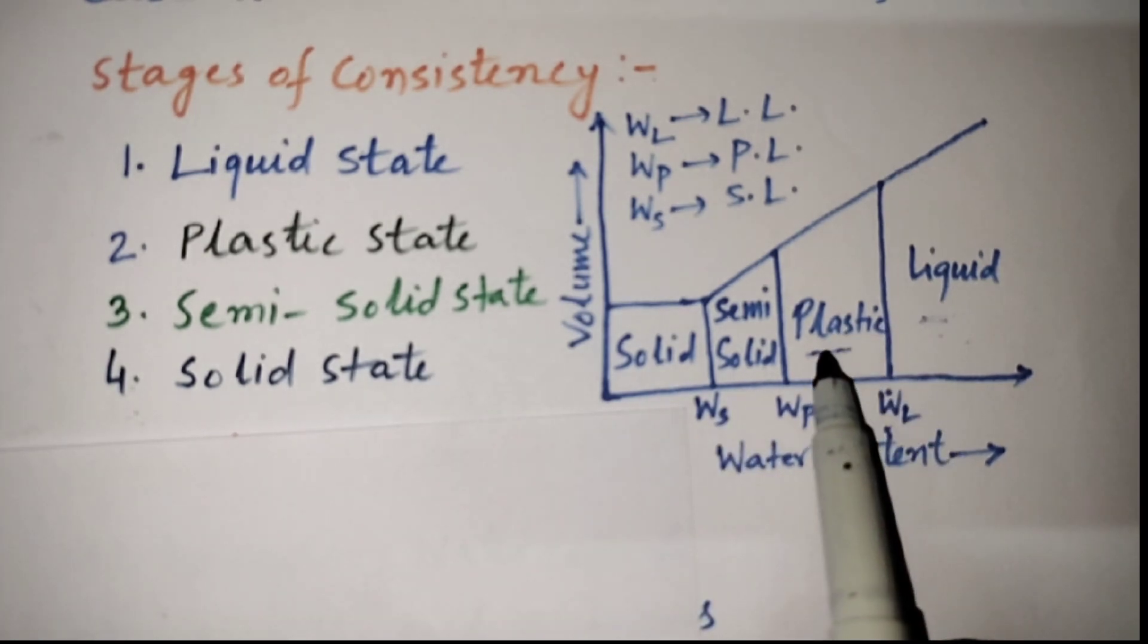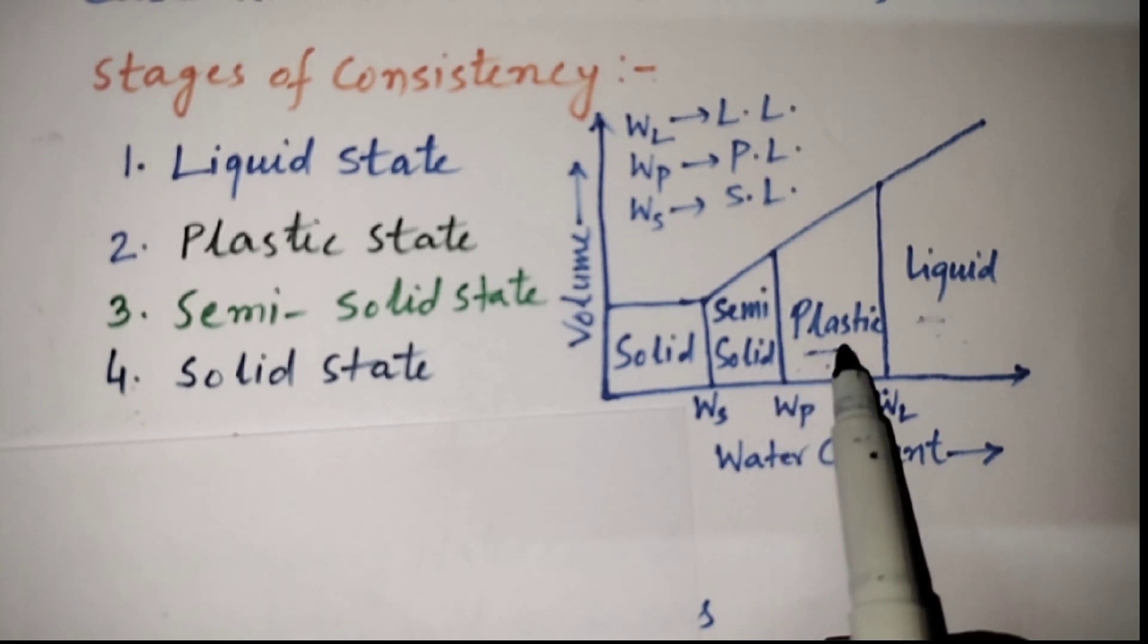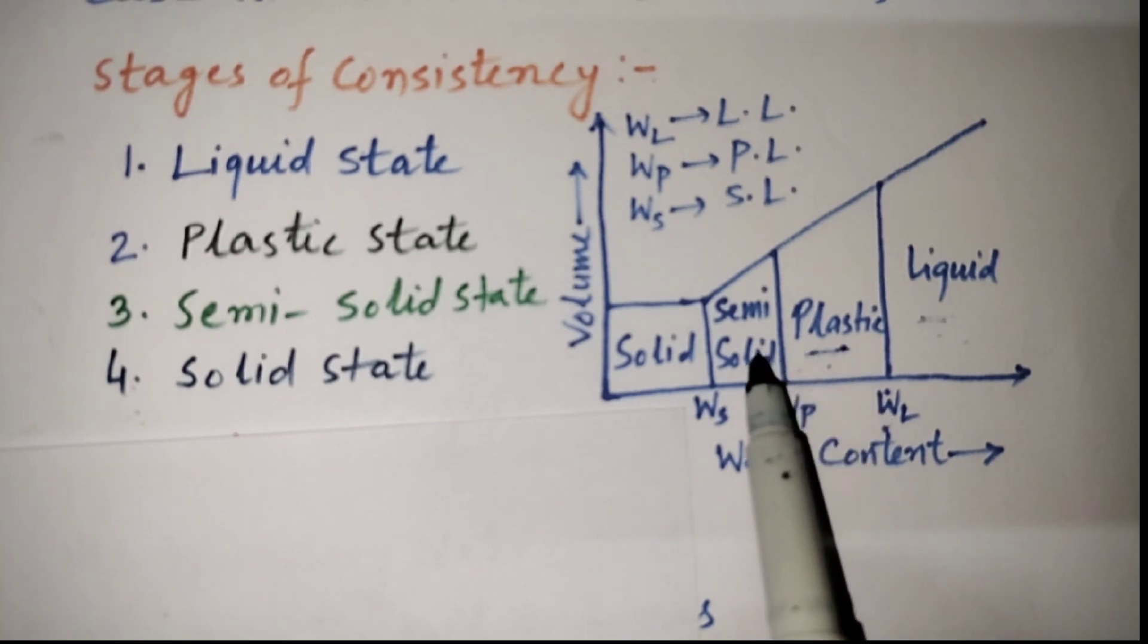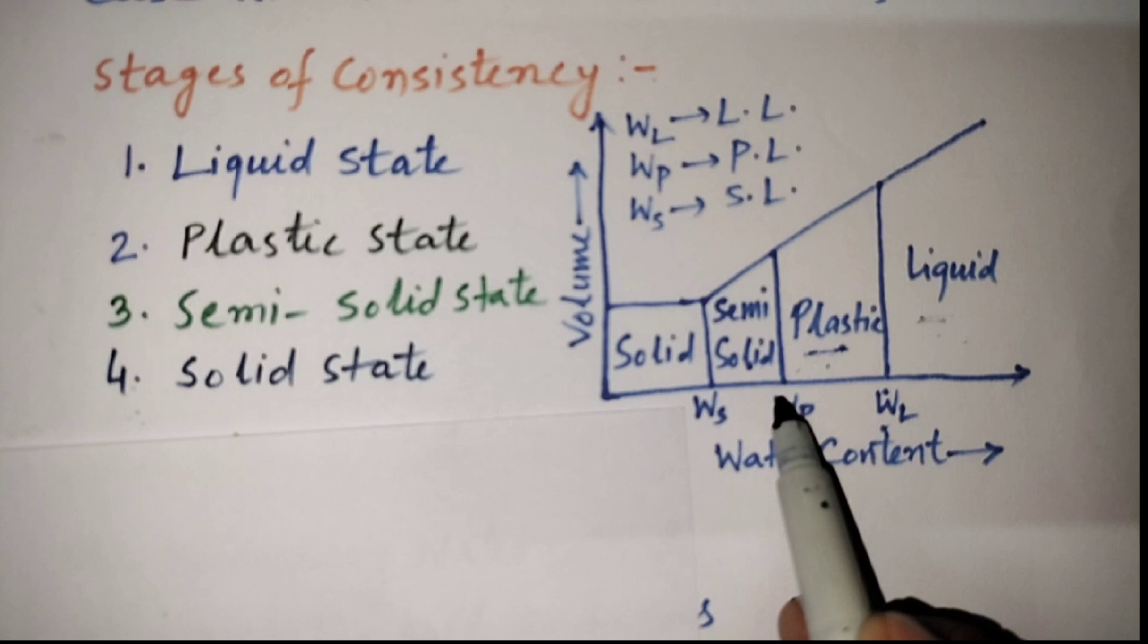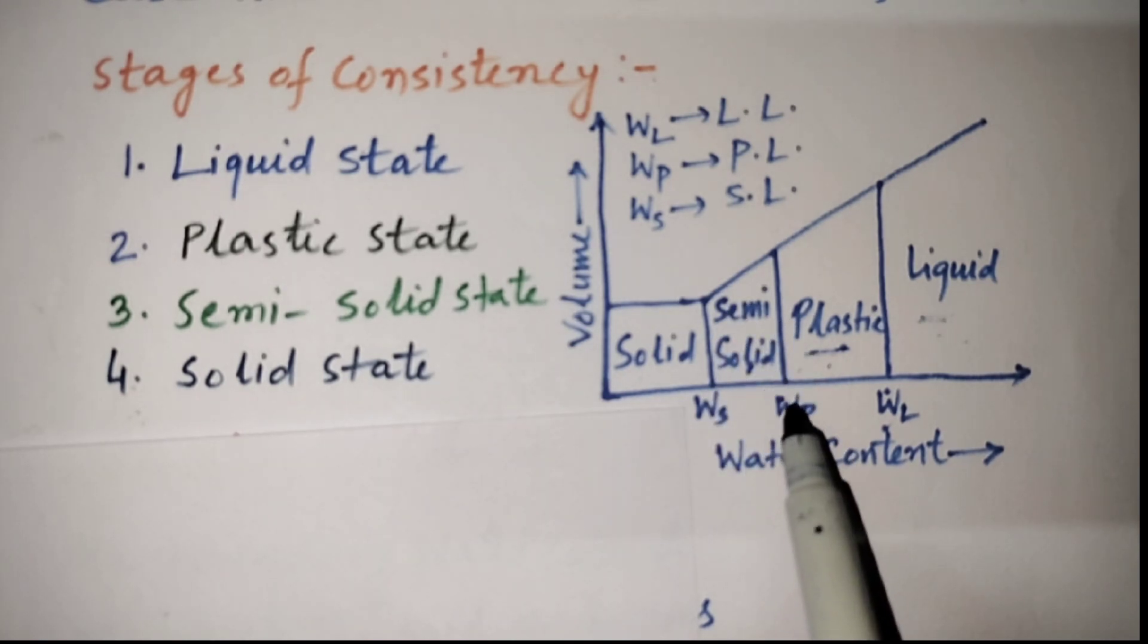In the plastic state, the soil can be molded to different shape without rupture due to its plasticity. If the water content is further reduced, the clay sample changes from the plastic state to the semi-solid state at the boundary water content, which is called plastic limit.